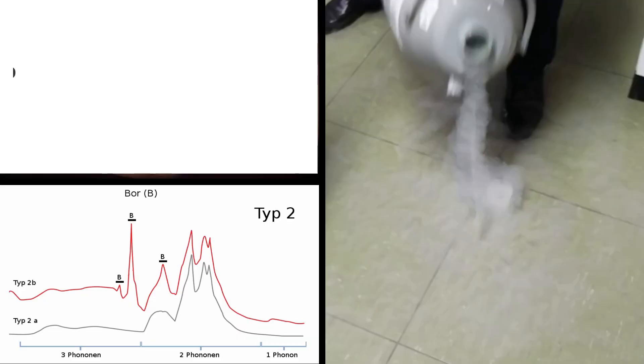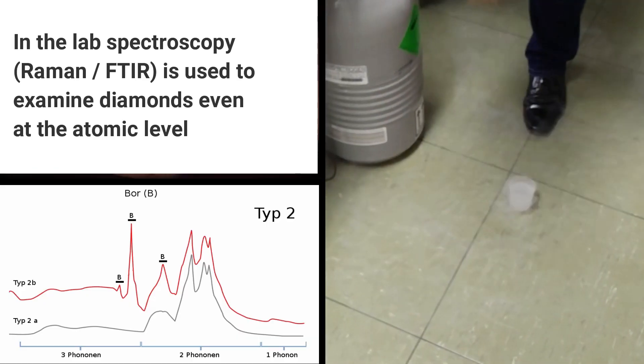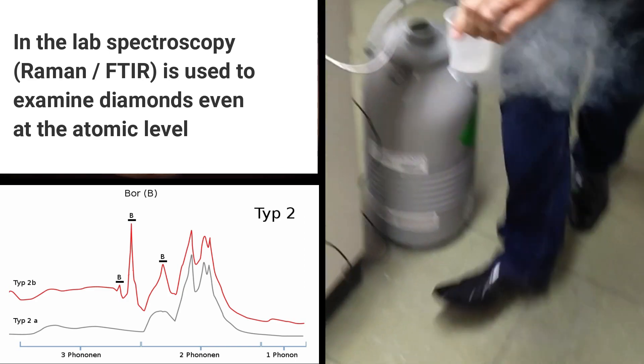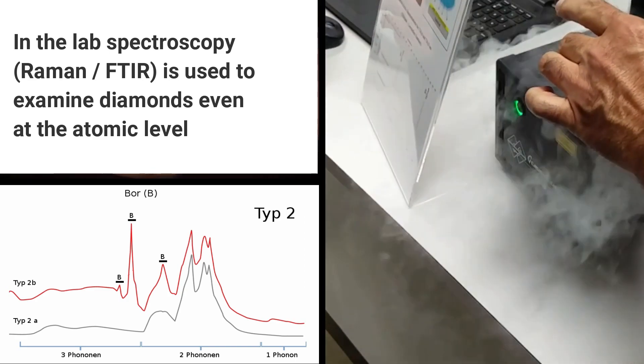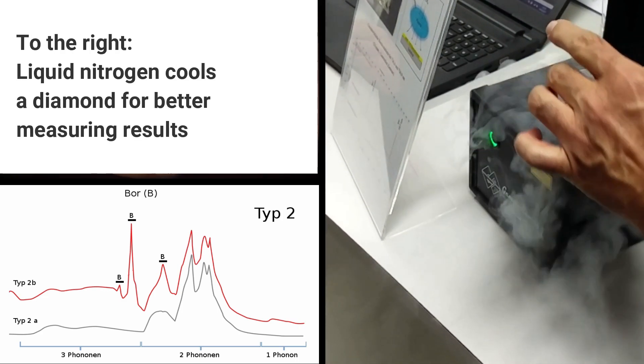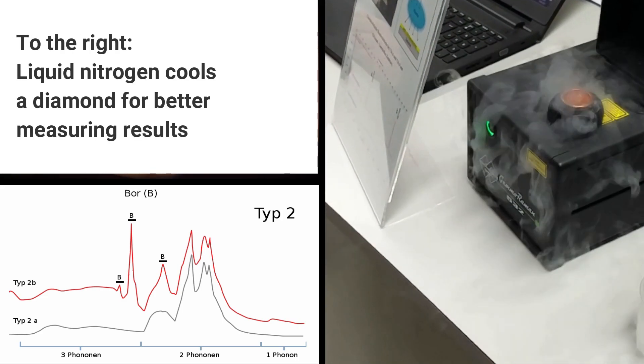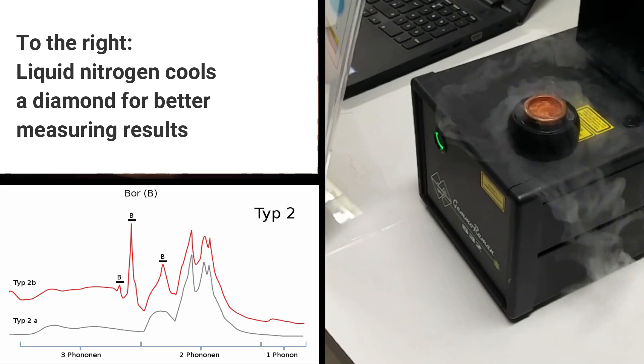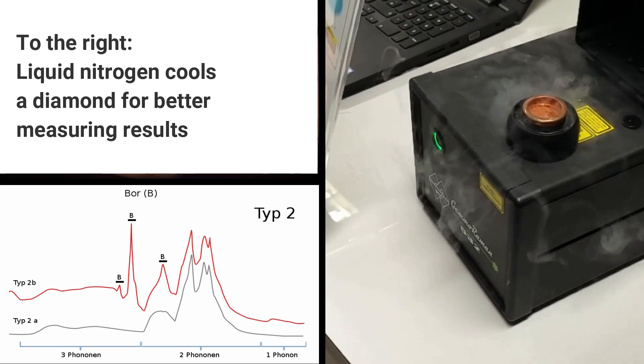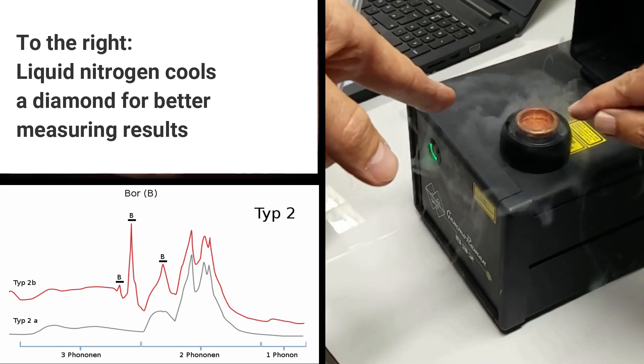Here it gets really interesting. By understanding the methods used to differentiate natural and synthetic diamonds, we also learn why we will always be able to tell them apart in the future. High-quality synthetic diamonds suitable for jewelry can be produced in the lab. However, due to the two methods used, the differences on the atomic level will always be evident.